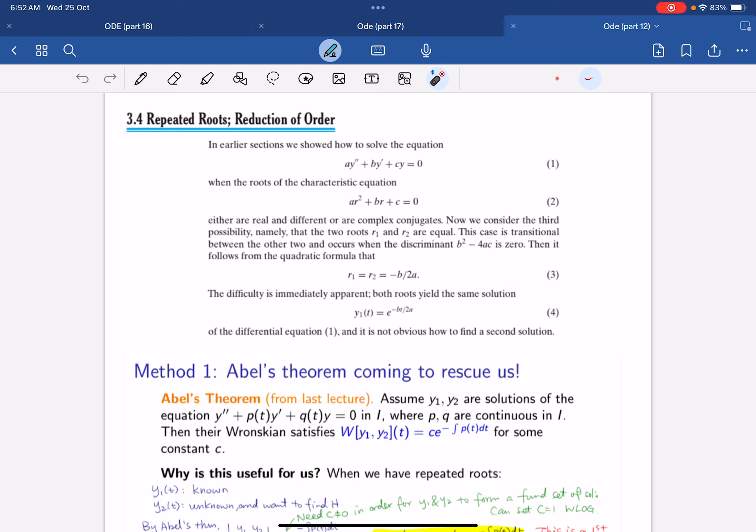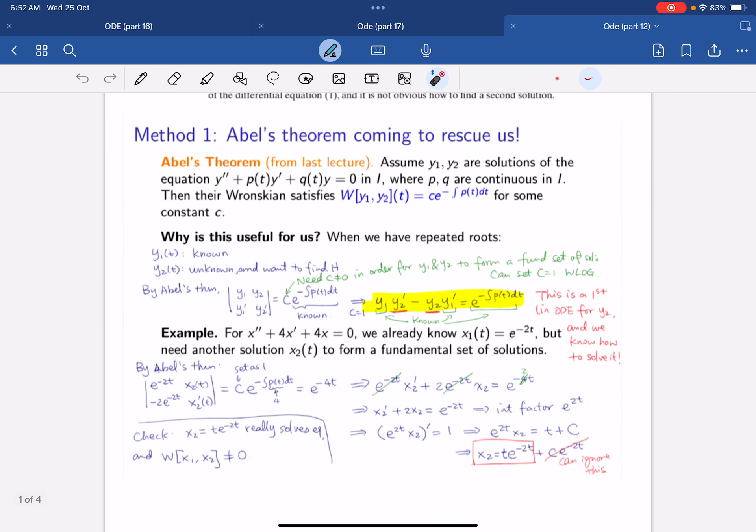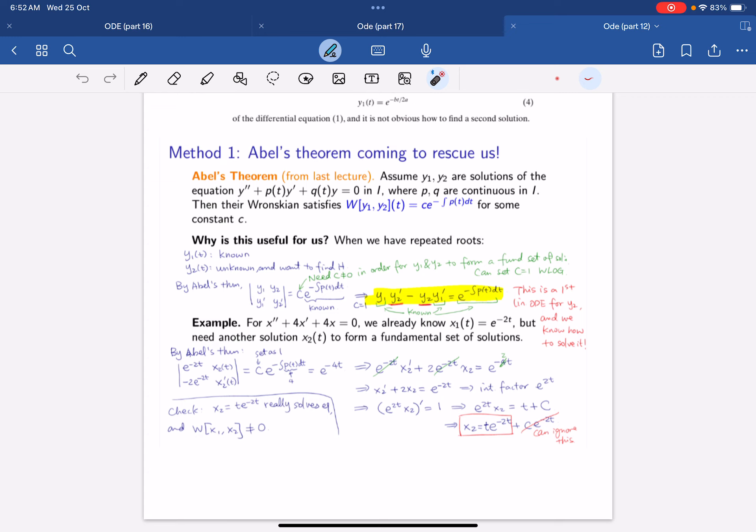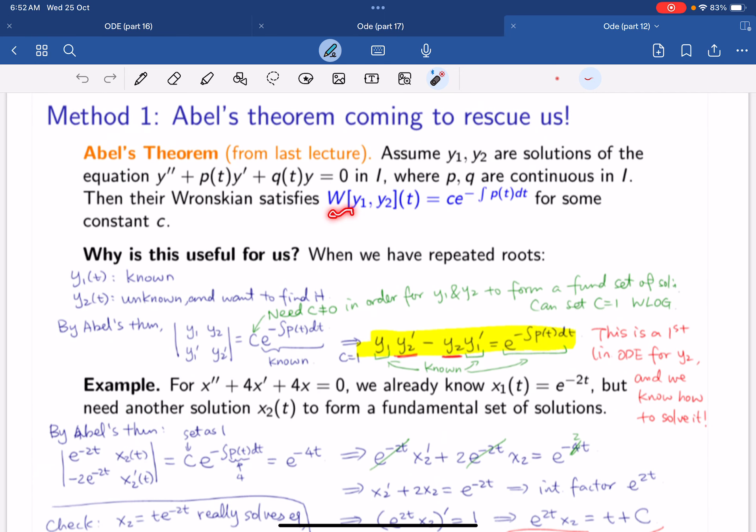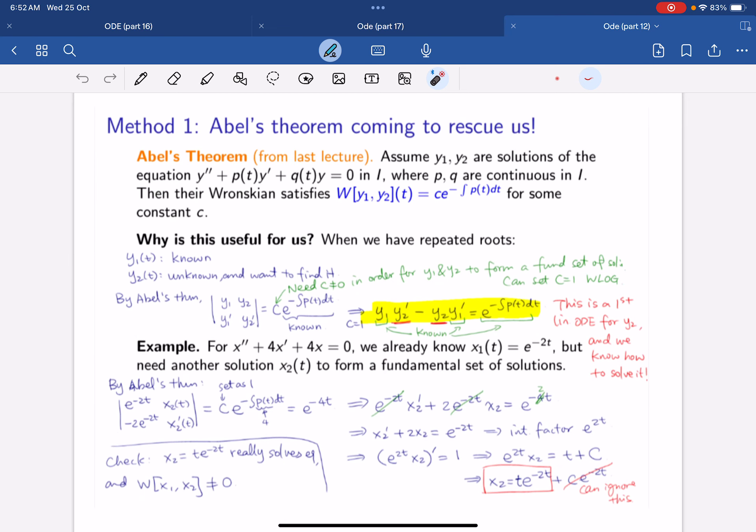So how do we get this second solution? We can use Abel's theorem to help us. Abel's theorem tells us that the second solution and the first solution must satisfy the Wronskian, and the formula must be this. We now know that y1 is known, so we want to know y2.